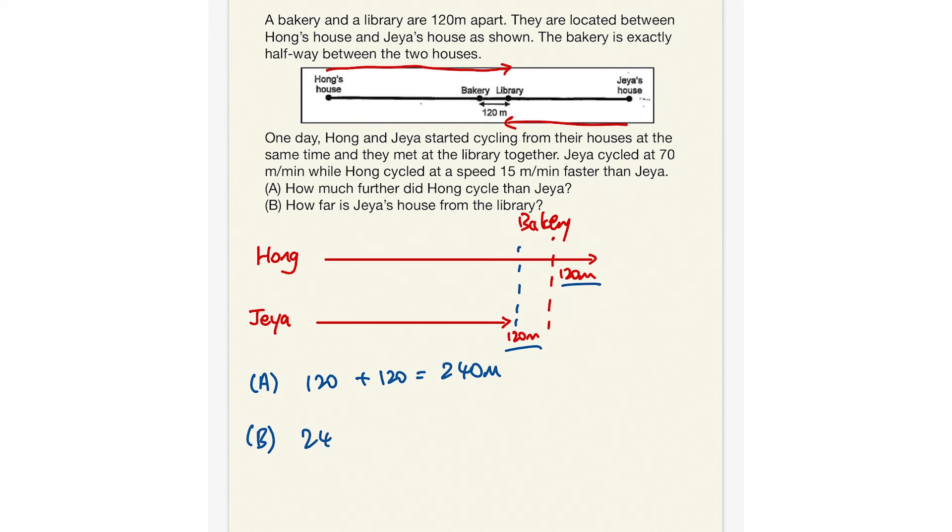240 meters divided by the difference in their speed, which you will get 16 minutes. So Hong and Jaya both cycled for 16 minutes. And eventually, Hong is able to travel 240 meters further than Jaya. So we know that they cycled for 16 minutes.